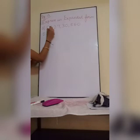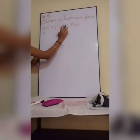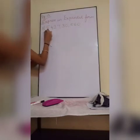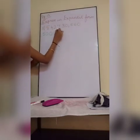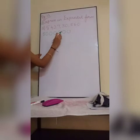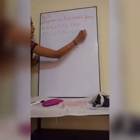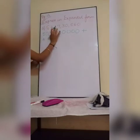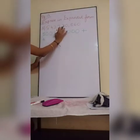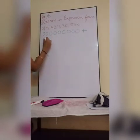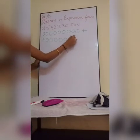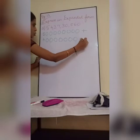So first, digit 5. After 5, how many digits are there? 1, 2, 3, 4, 5, 6, 7, 8 — so 8 zeros you will put. Plus after that, 4. After 4, how many digits are there? 1, 2, 3, 4, 5, 6, 7 — 7 zeros.